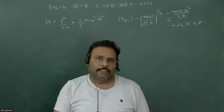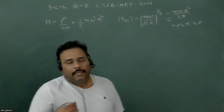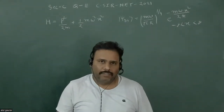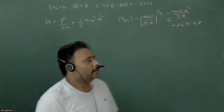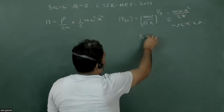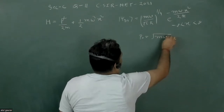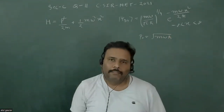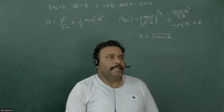Now, suddenly we give some impulse to the particle in the form of momentum — we impart extra momentum to the particle. This extra momentum given in the problem is p-naught equal to root of m omega h-bar.